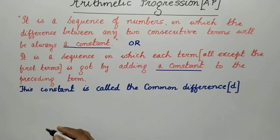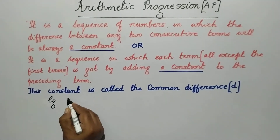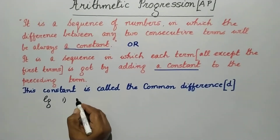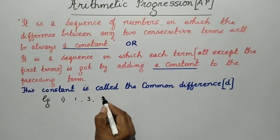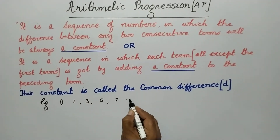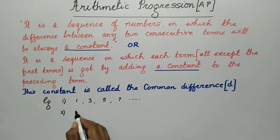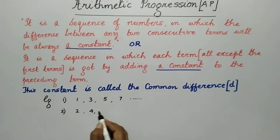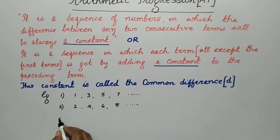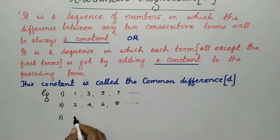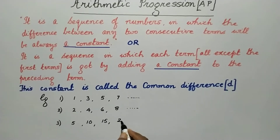What examples can be given? The first example is the sequence 1, 3, 5, 7, and so on. A second example is 2, 4, 6, 8, and so on. A third example is 5, 10, 15, 20, and so on. We can give any number of examples like these.